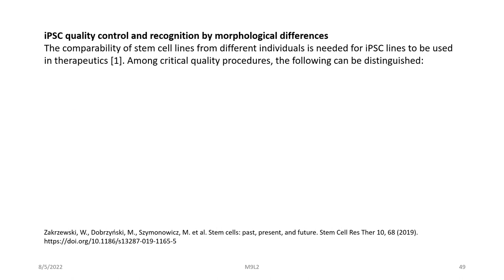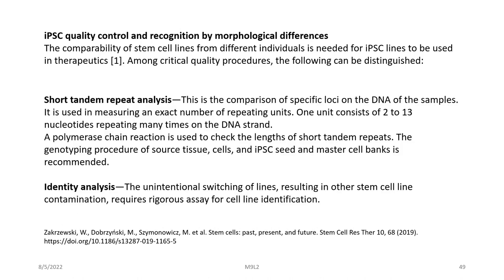An important consideration when using IPSCs is their quality. We must have quality control of IPSCs and recognition of morphological differences; comparability of stem cell lines from different individuals is needed for therapeutic use. Among critical quality procedures: short tandem repeat (STR) analysis compares specific loci on the DNA of samples to measure exact numbers of repeating units — one unit consists of 12 to 13 nucleotides repeating many times — and a PCR is used to check the balance of short tandem repeats. Genotyping procedures of source tissues, cells and iPSC seed and master cell banks is recommended.